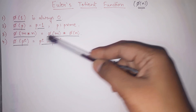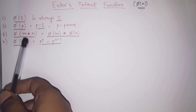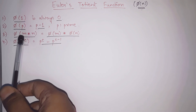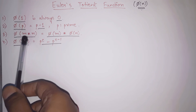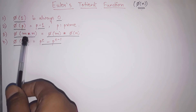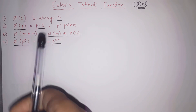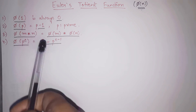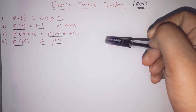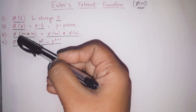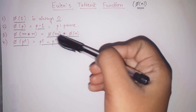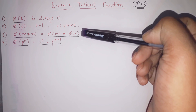One more point: for phi of m times n, the formula phi of m times n equals phi of m into phi of n holds if and only if m and n are relatively prime. Relatively prime means their HCF should be 1 — the highest common factor of those two numbers should be 1. So if m and n are relatively prime, then and only then can I say it equals phi of m into phi of n.